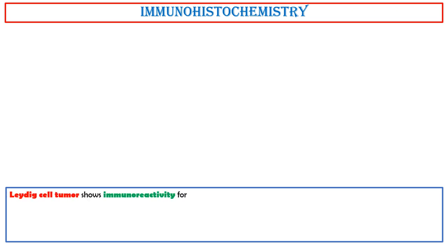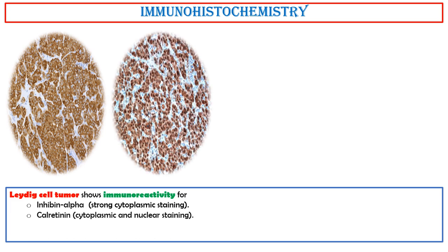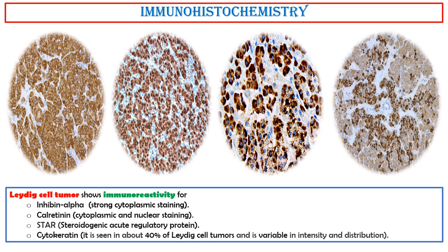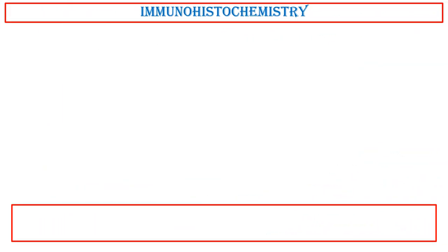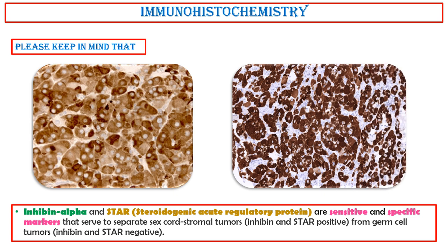Immunohistochemistry. Leydig cell tumor shows immunoreactivity for inhibin alpha (strong cytoplasmic staining), calretinin (cytoplasmic and nuclear staining), and StAR (steroidogenic acute regulatory protein). Cytokeratin is seen in about 40% of Leydig cell tumors and is variable in intensity and distribution. Please keep in mind that inhibin alpha and StAR are sensitive and specific markers that serve to separate sex cord stromal tumors — inhibin and StAR positive — from germ cell tumors — inhibin and StAR negative.